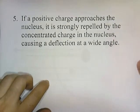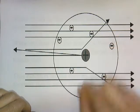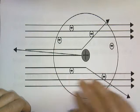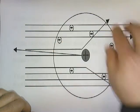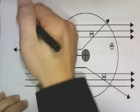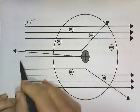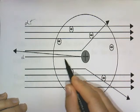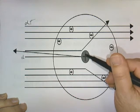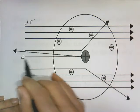Instead of the positive charge being spread out, it's concentrated at a single point called the nucleus. There's a lot of space in the atom, and the electrons are orbiting far away. This space allows most of the alpha particles to pass straight through. But if an alpha particle comes close to the nucleus, it gets reflected or scattered at an angle, because the concentrated positive charge is strong enough to exert a strong repulsive force on the approaching positive charge.